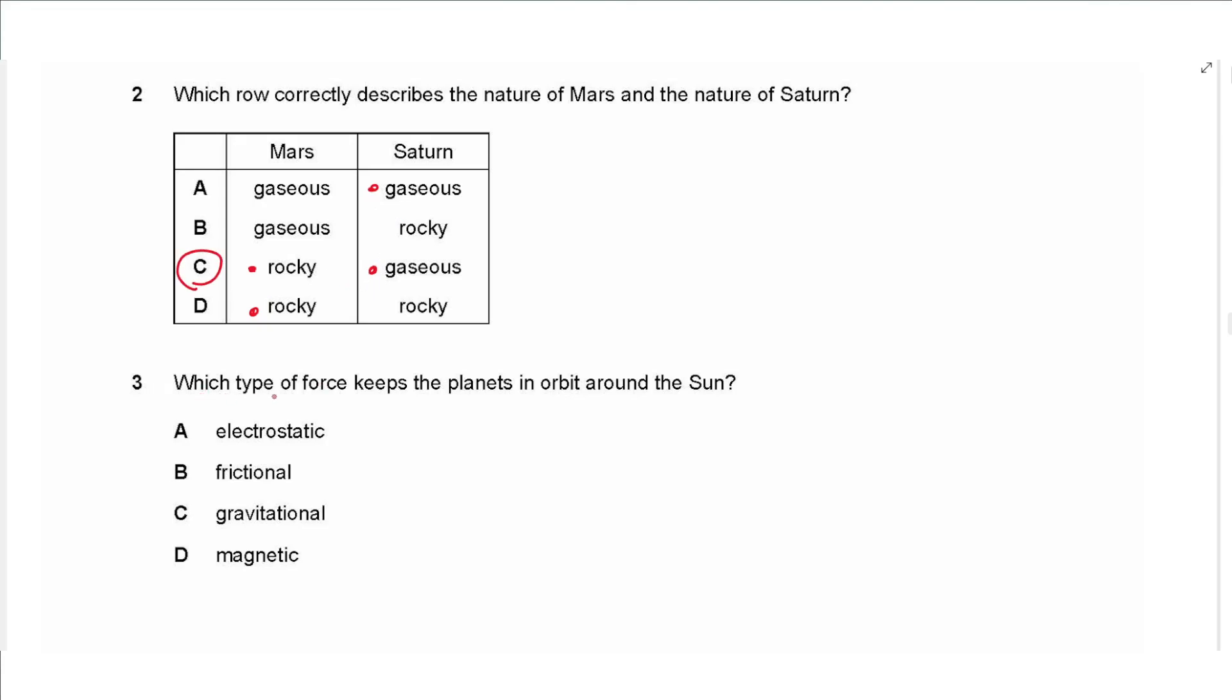The next question says, which type of force keeps the planets in orbit around the sun? It's not electrical, it's not friction, it is the gravitational force, it's not magnetic, so the answer is C.